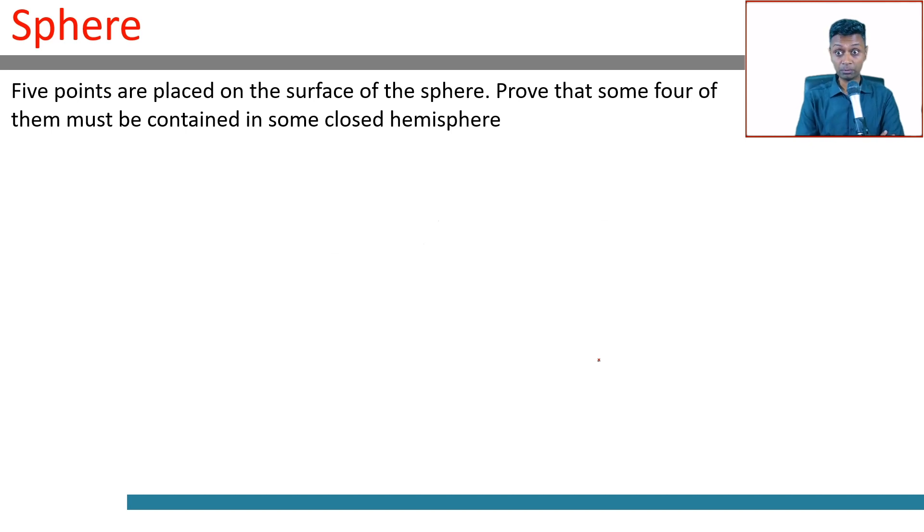Five points are placed on the surface of a sphere. Prove that some four of them must be contained in some closed hemisphere. A wonderful question to start with. You're not going to see this in the CAT—you're not going to be asked to prove something.